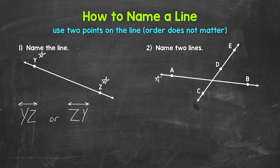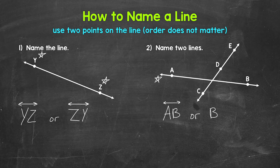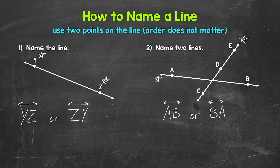Let's start with this line right here, where we have point A and point B. We can name this line AB, or if we switch the order, we can name this line BA as well. Now for our second line, we have points C, D, and E. We only need to use two points to name this line, so we can use whatever combination or order we'd like — line DC, line DE, line CE, and so on.